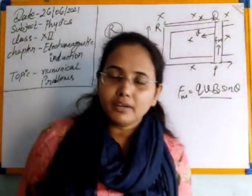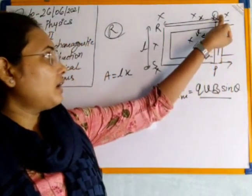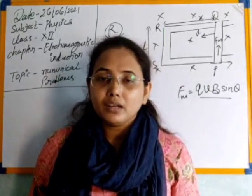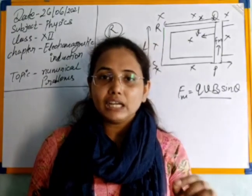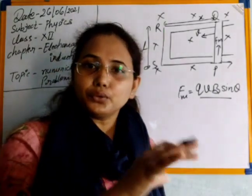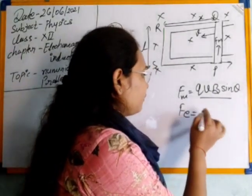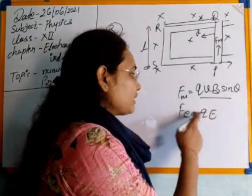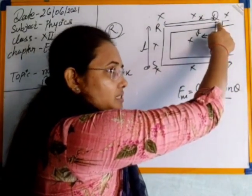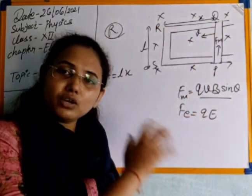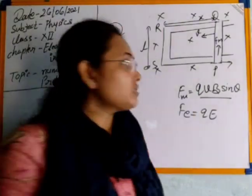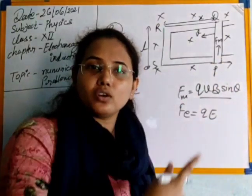The Lorentz force acts on electrons in the upward direction, so electrons start to move upward and accumulate at end Q. Since electrons are negatively charged, they produce an electric field around them. The next electron feels electrostatic repulsion, performing work. The force the second electron experiences in the electric field of the first is F_e = qE. Continuously, Lorentz force moves electrons toward this arm while simultaneously electrostatic repulsion also acts.